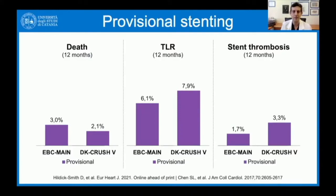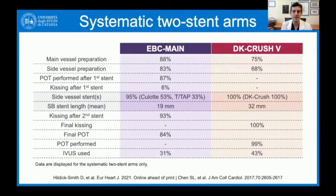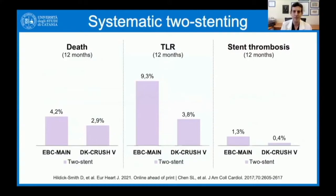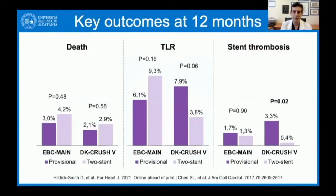For systematic two-stent strategies, ABC Main used culotte in 53% and T or TAP in 33%, while DK Crush 5 used DK Crush by definition. IVUS was underused in both trials: 31% in ABC Main and 43% in DK Crush 5. TLR at one year for systematic two-stent was 9.3% in ABC Main versus 3.8% in DK Crush 5. Overall, it appears that TLR results are explained by good performance of the provisional approach in ABC Main and good performance of DK Crush technique in DK Crush 5.